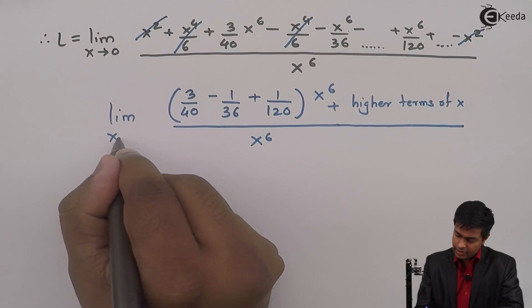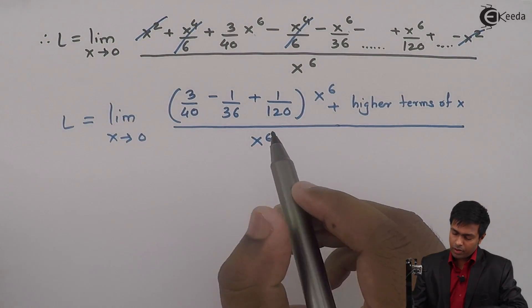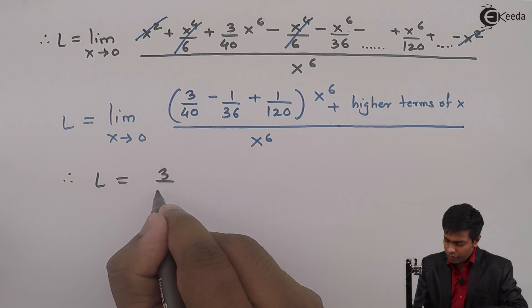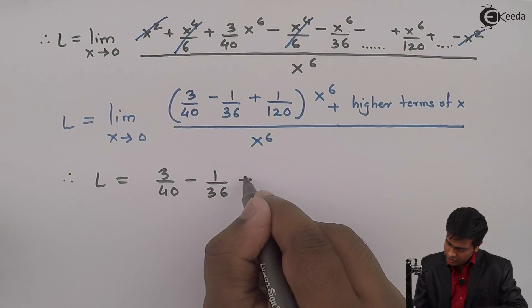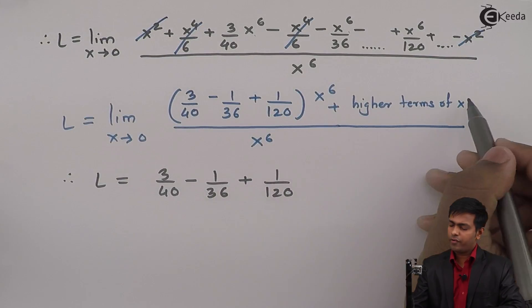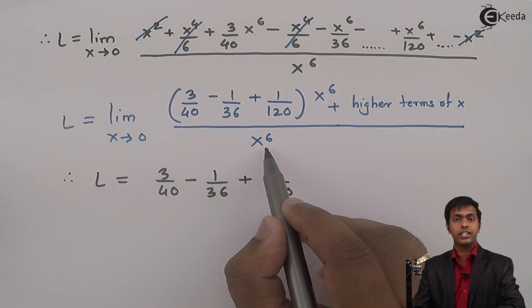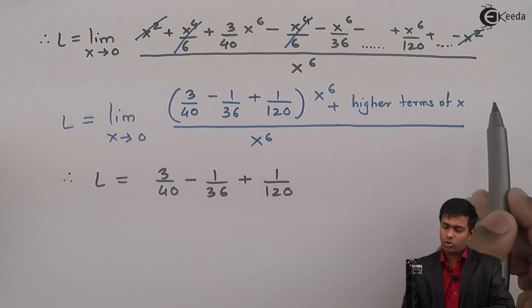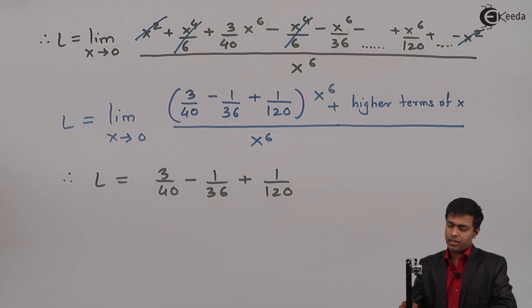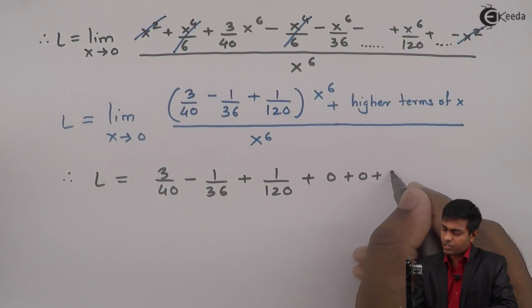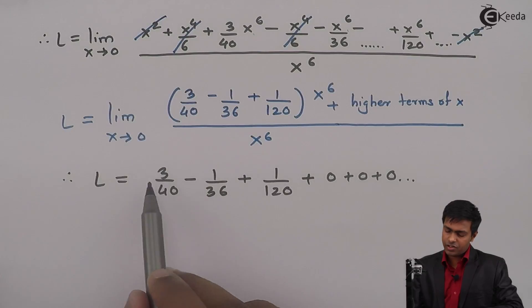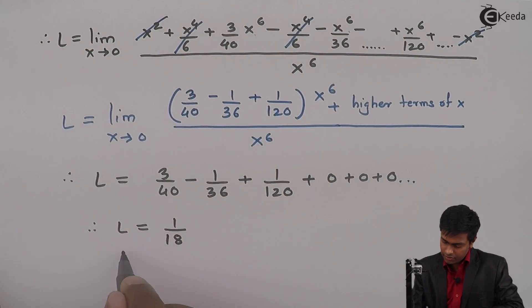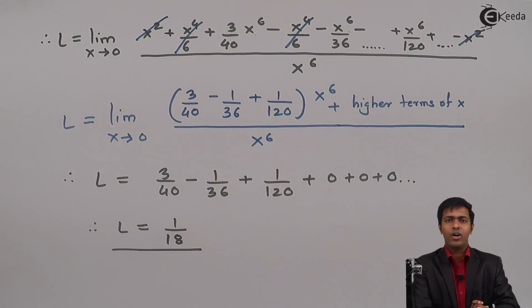The x² terms cancel with minus x², and x⁴/6 cancels with minus x⁴/6. The remaining x⁶ coefficients are 3/40 minus 1/36 plus 1/120, multiplied by x⁶ upon x⁶. Dividing by x⁶, the higher power terms contribute extra x factors which become 0 as x tends to 0. Adding the three coefficients gives L equal to 1 upon 80. So the value of the given limit is 1/80. Thank you.